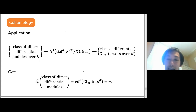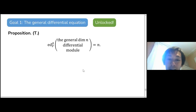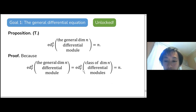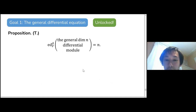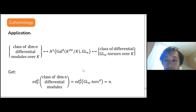In summary: differential modules can be re-expressed as differential torsors for the group GLₙ. The differential essential dimension of the general differential module — how many parameters are needed to write it down — equals the differential essential dimension of the class of differential modules. Using cohomology, that is the same as the differential essential dimension of the class of GLₙ differential torsors, which we already established is N.